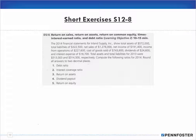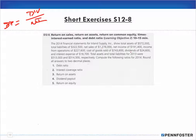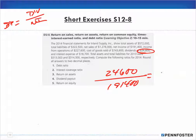The math is the easy part — the thinking part is knowing the formula for your ratio. In this case, dividend payout equals dividends over net income. Once you know the formula, work through the word problem to find what's directly related, what's irrelevant, and what must be manipulated. Dividends are given as 24,600 and net income is 191,400. Divide one by the other and you get 13 percent — that's the dividend payout ratio.